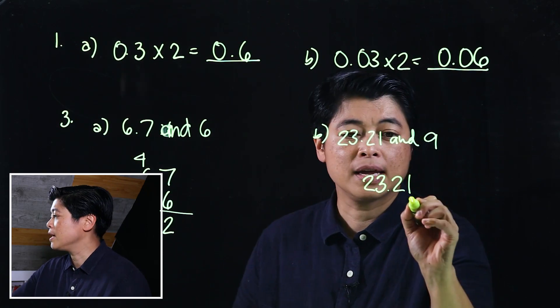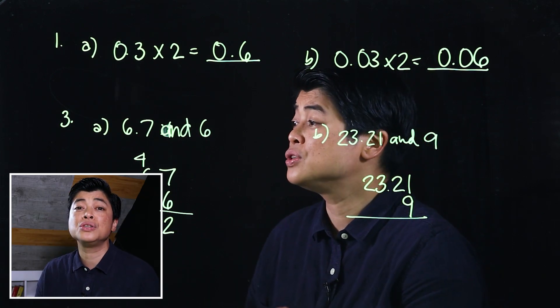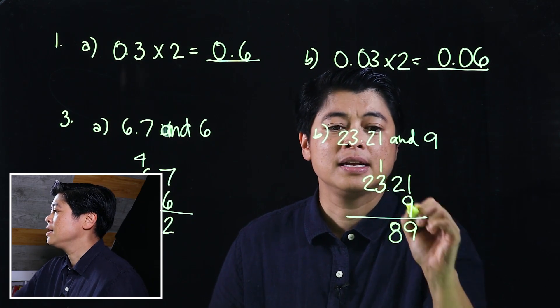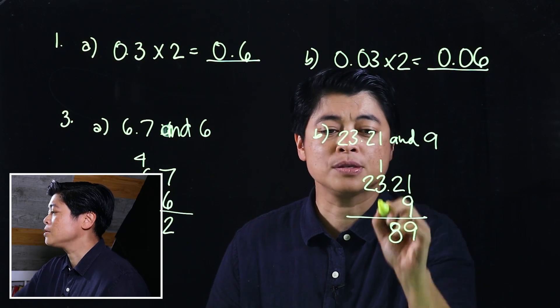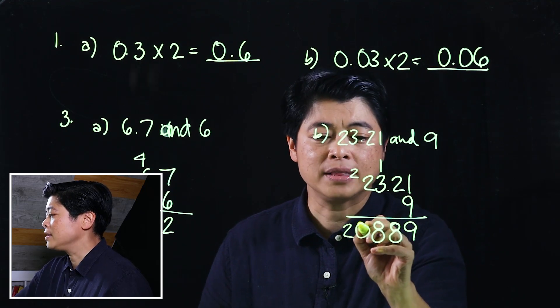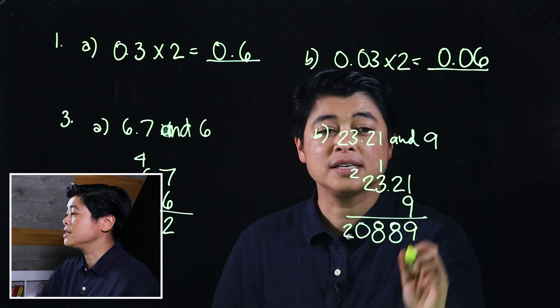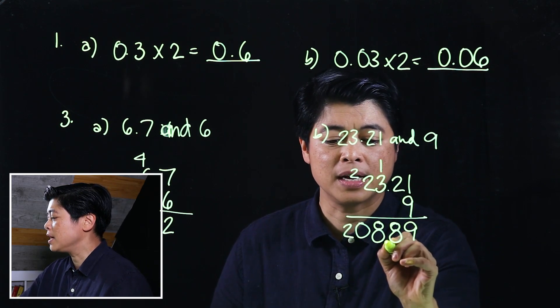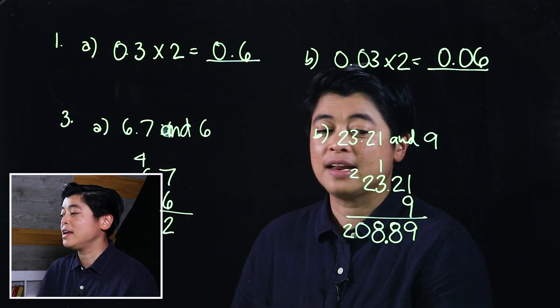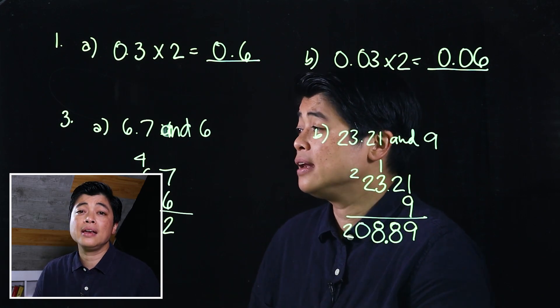So the bigger number on top and then I'll put the 9 aligned on the right. Then we multiply as if there's no decimals. So this will be 9, this will be 18, that will be 27 plus 1 is 28, this will be 18 plus 2 is 20. Now if we look, there are two decimal places, so we put the decimal right there. The product of 23.21 and 9 must be 208.89.